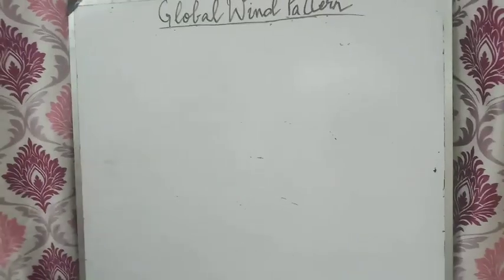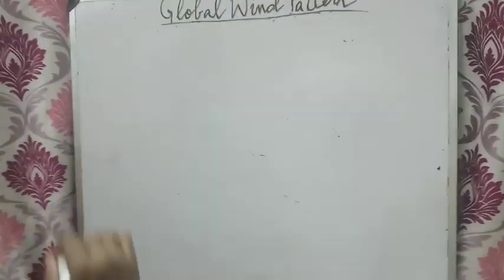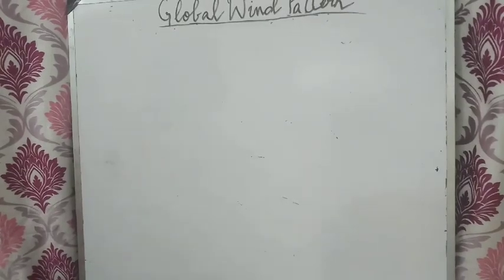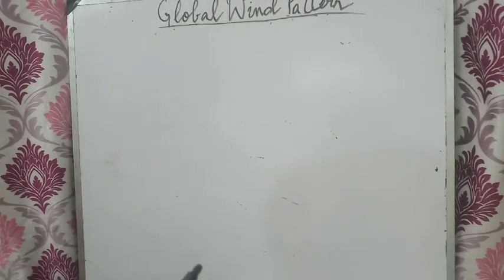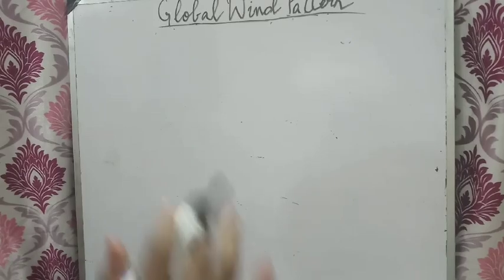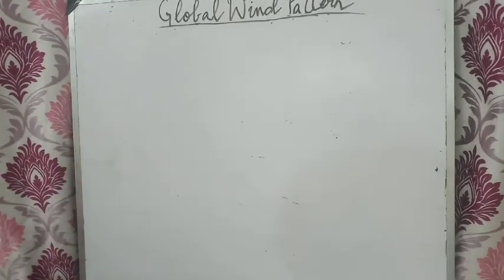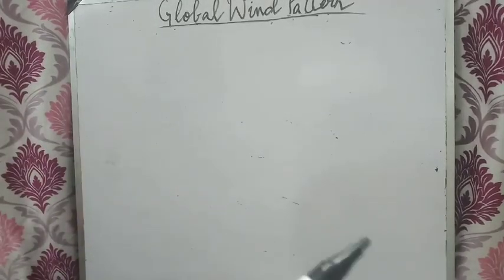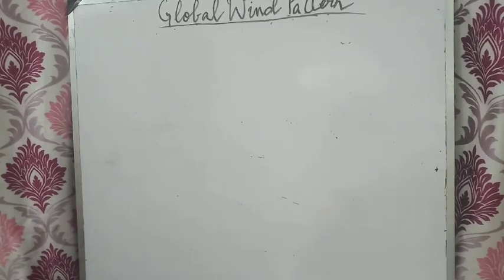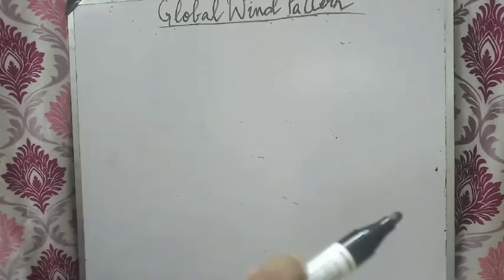Today we are going to study global wind patterns. What does global wind pattern mean? The wind which blows globally across the earth. There are two types of winds: permanent wind and local wind. Local winds are those which blow locally, like loo and other winds that blow in our places. But permanent winds are those which blow throughout the year in the same pattern almost. So we are going to study the permanent wind that blows globally.